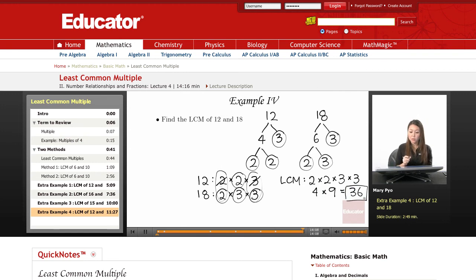So the least common multiple of 12 and 18 is 36. Thank you for watching Educator.com.